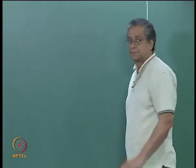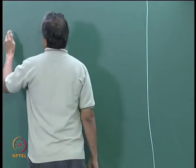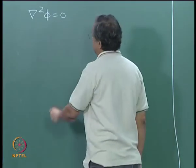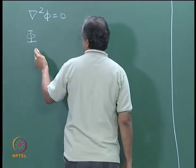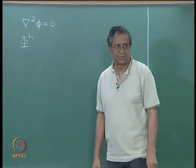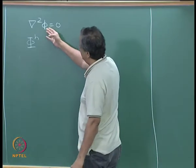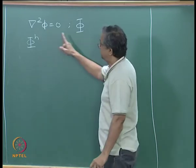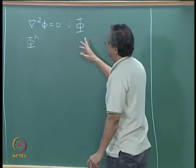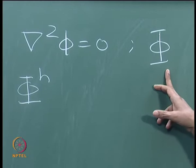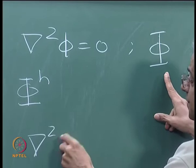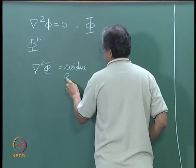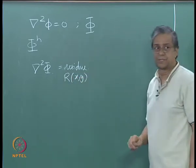Today, we are solving nabla squared phi equals 0, and we did the discrete version of that. If phi is the candidate solution and little phi is the actual solution, then substituting into the equation: if it were a solution, nabla squared of this would be 0. But if it is not, it will leave a residue — nabla squared phi equals some residue R. In 2 dimensions, this would be R of xy.